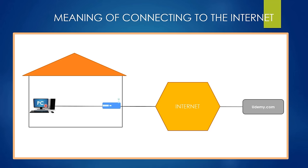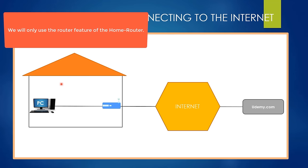Now we are going to discuss the meaning of connecting to the internet from the computer's perspective. Assume we are in a home instead of an office and we have only one computer. To be able to connect to the internet, what we only need is a home router — there is no need for a switch since we don't have other devices to connect to each other. You could use a router device instead of a home router, since we only want to use the router feature and there is only one computer in the environment.